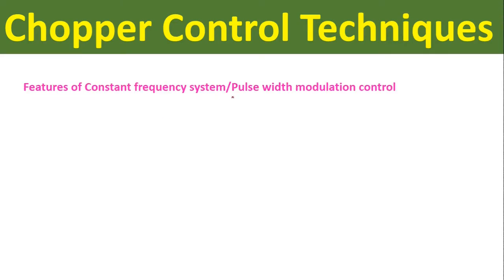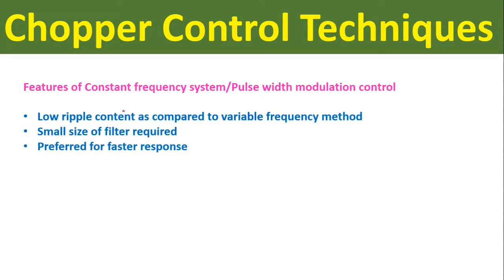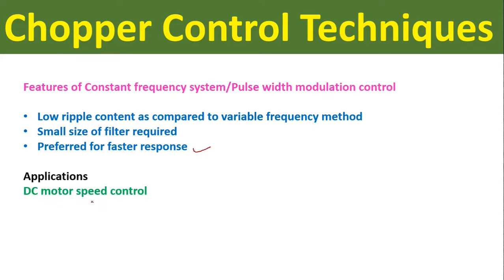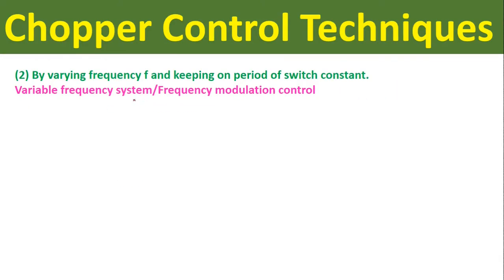Features of constant frequency system or pulse width modulation control: In PWM control, low ripple content is present as compared to the variable frequency system, therefore a small size filter is required. PWM control is preferred for faster response and is used in DC motor speed control.